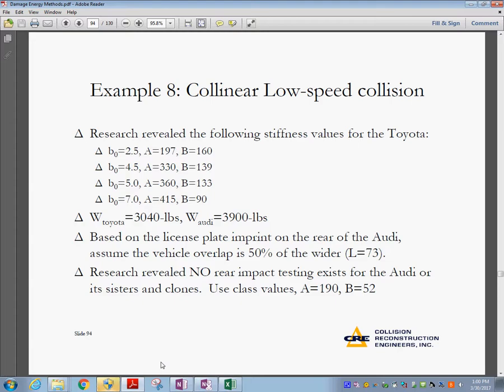So research revealed the following stiffness values for the Toyota. You have V0 and B, V and A also. Weight of the Toyota, 3,000 pounds. Weight of the Audi, 3,900 pounds. Vehicle overlap is 50%. That's 50% is what overlaps with respect to the axis of the tires.